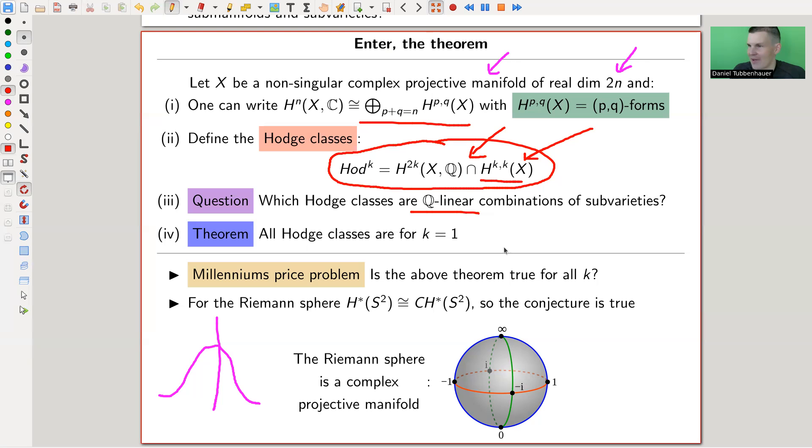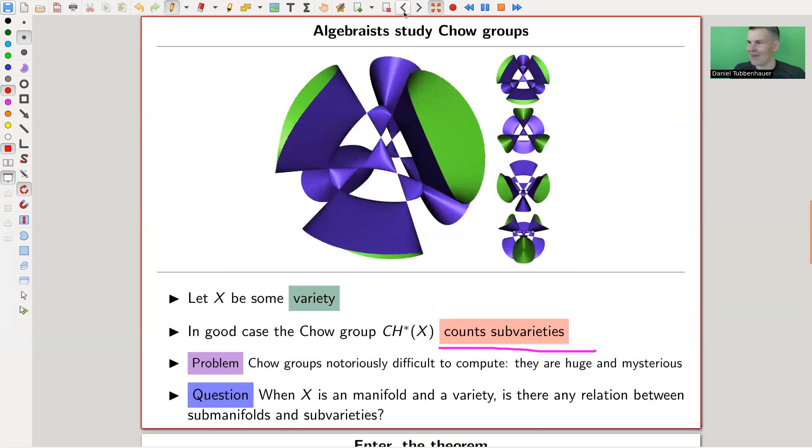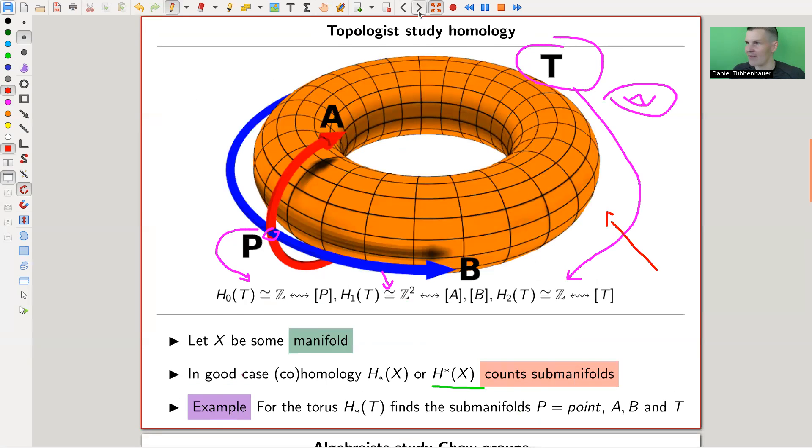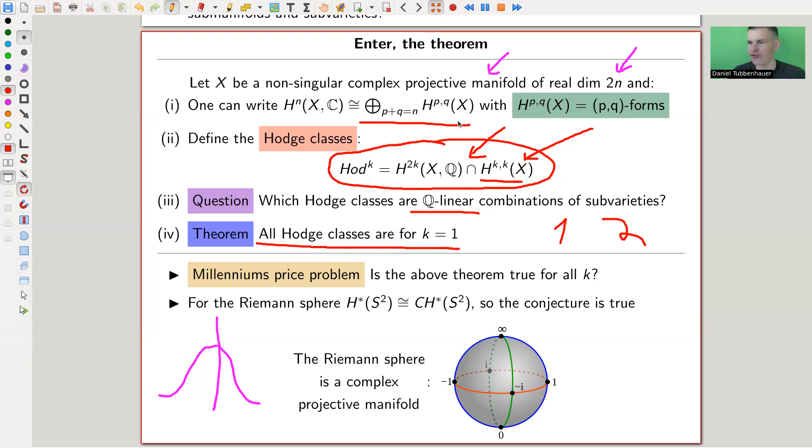And the theorem I want to sell is that for k equals 1, so something like the two-dimensional space that we take the one-dimensional ones, so really this type of picture here, if you want, so the middle things, actually it's true. And that's also difficult to show, and it was known before the Hodge conjecture came out. It was kind of the motivation for the Hodge conjecture. And the millennium prize problem is to also show the same for all k. Higher dimensional spaces, and is every sub-manifold expressible as a sub-varieties. So for the Riemann sphere, for example, the conjecture is true, because turns out for the Riemann sphere, the cohomology is the same as the Chow group.